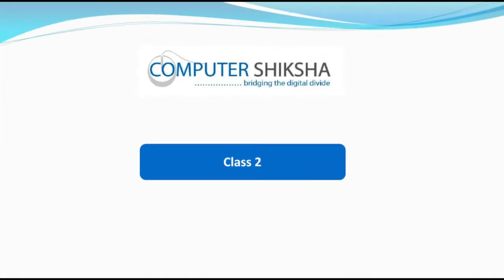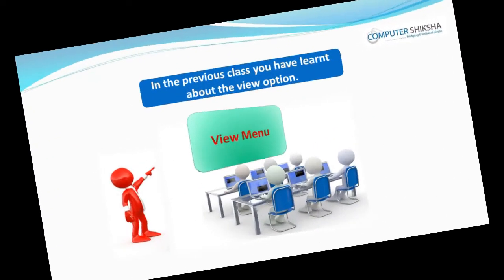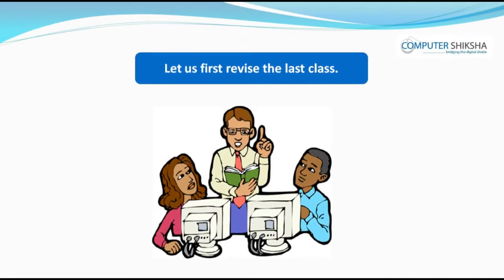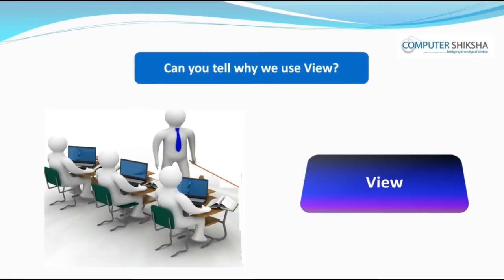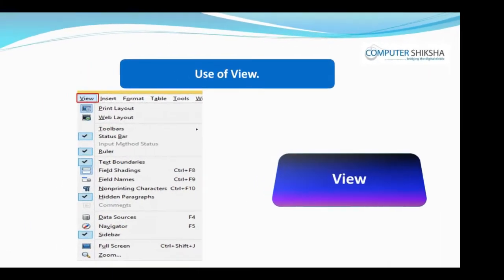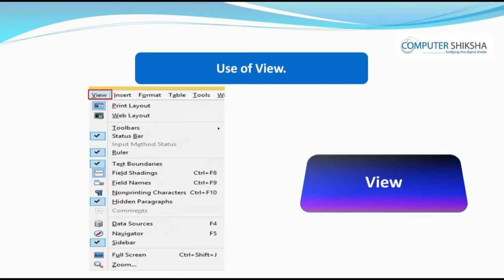Good day to all of you. In the previous class, you have learned about the View option. Let us first revise the last class. Can you tell why we use View? The View option on the Writer page helps us in hiding the functions being shown on the page and also to show the functions which have been hidden earlier.